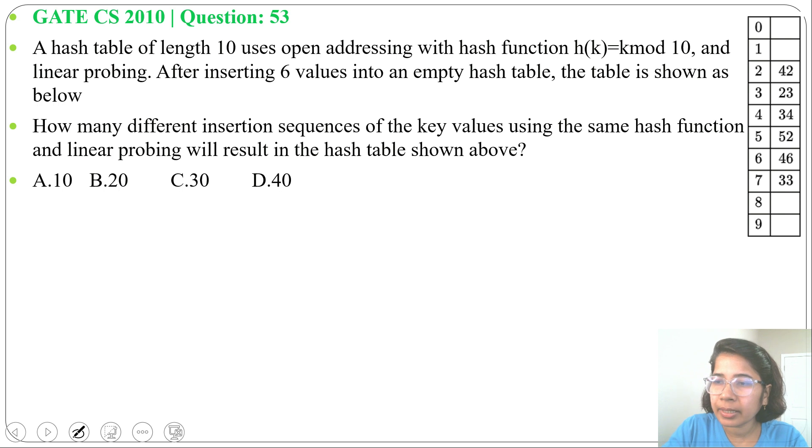Now analyze the hash table: 42, 23, 34 and 46. They are in their hash value. 42 hash value is 2, 23 hash value is 3, 34 hash value is 4 and 46 hash value is 6. So only keys 52 and 33, they are not in their hash value.